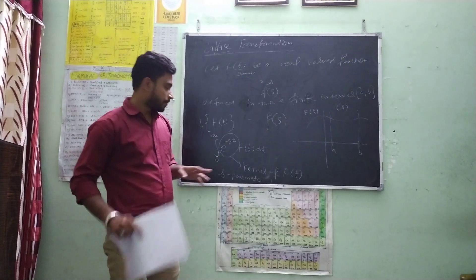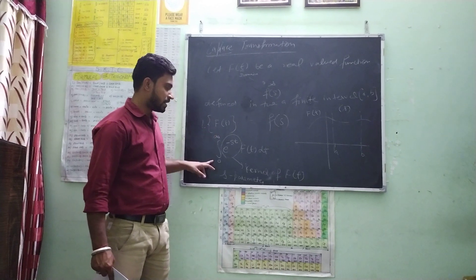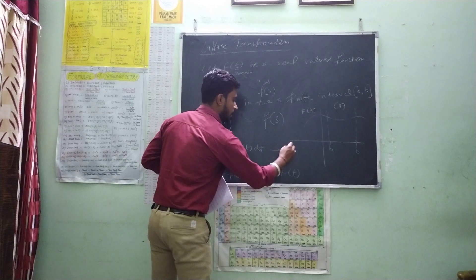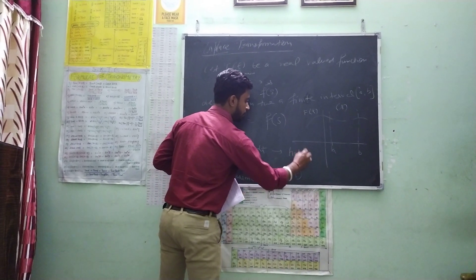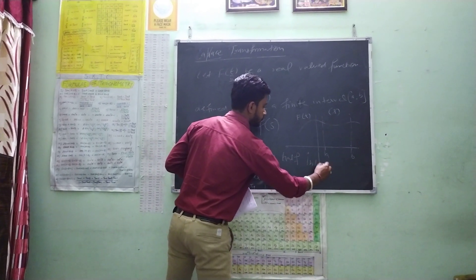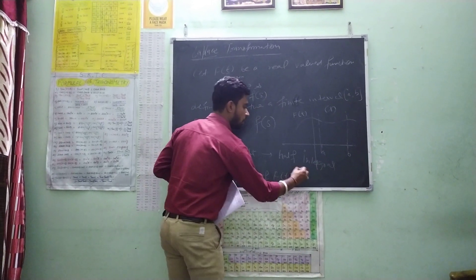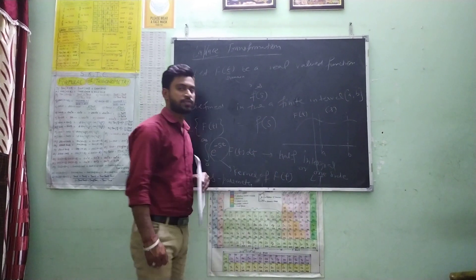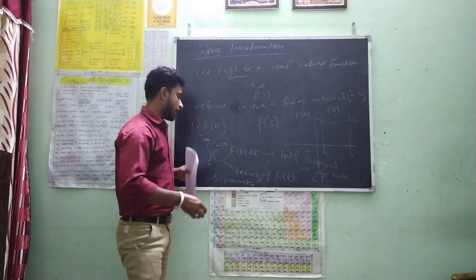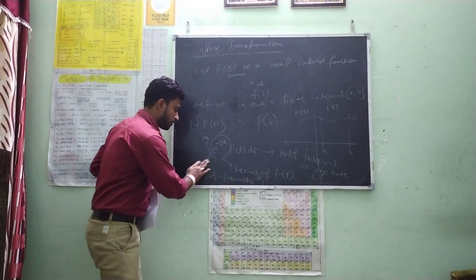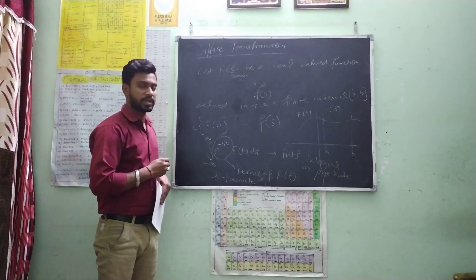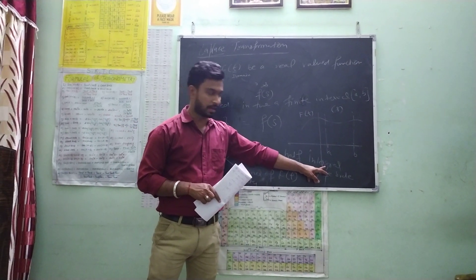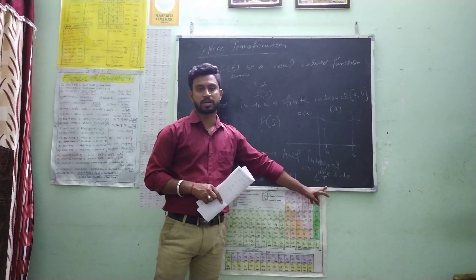Sometimes this integral from 0 to infinity is called the half integral, or one-sided Laplace transformation. Or, if we take the integral from minus infinity to plus infinity, then it is called the full integral, or full range integral, or double-sided Laplace transformation.